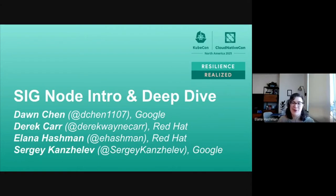I'm Alana Hashman. I'm a software engineer at Red Hat, where I work on the OpenShift node team. I've been contributing to Kubernetes since about 2018, and I work upstream on the node team as well as in SIG instrumentation and the production readiness review team.